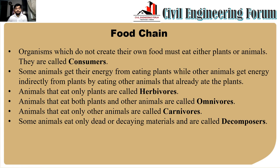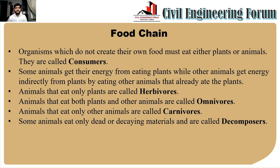Animals that eat only plants are called herbivores. Animals that eat both plants and other animals are called omnivores — we as humans can consider ourselves omnivores. Animals that eat only other animals are called carnivores. Some animals eat only dead and decaying materials and are called decomposers.